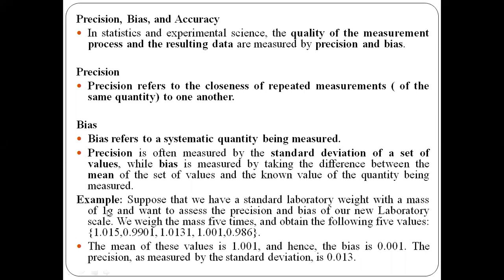To calculate bias, find the mean of these five values by adding them all and dividing by five. The mean comes out to 1.001. The actual quantity being measured is 1 gram. So bias = mean minus actual = 1.001 − 1 = 0.001. That is the bias for this measurement process.